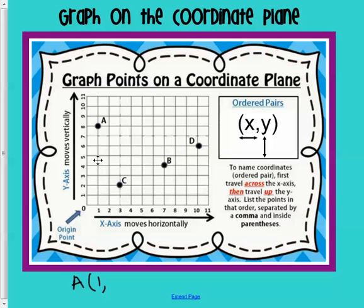and then we moved up 1, 2, 3, 4, 5, 6, 7, 8. So, our y value is at 8. So, A's coordinate point is 1 comma 8.